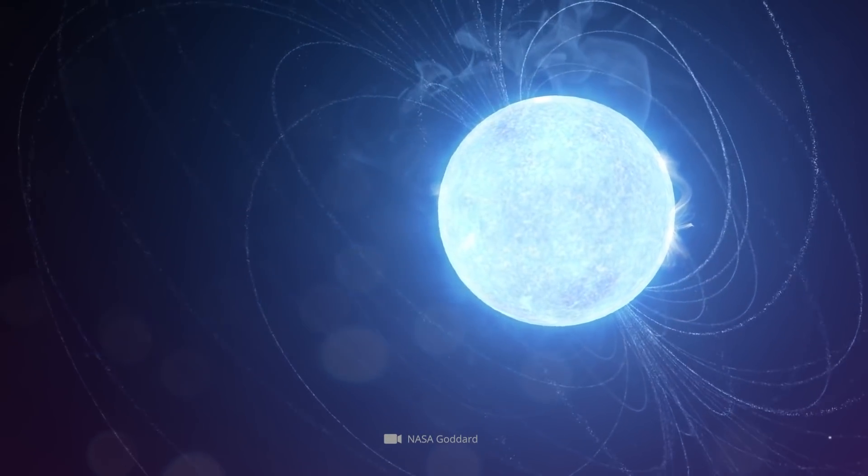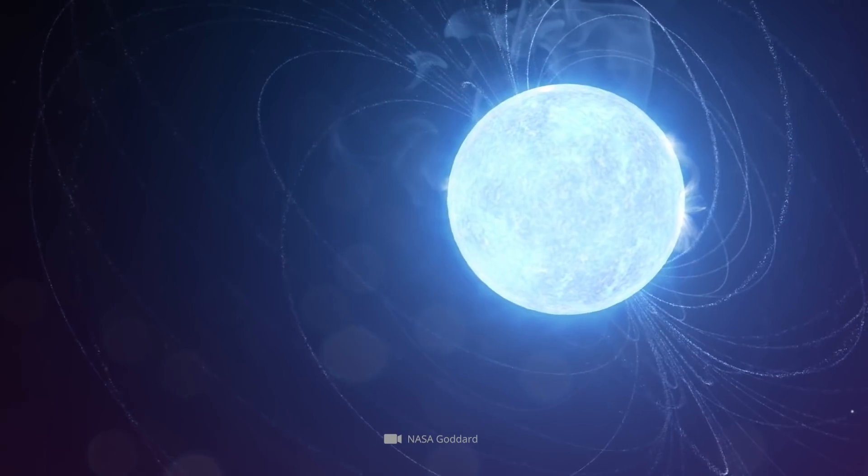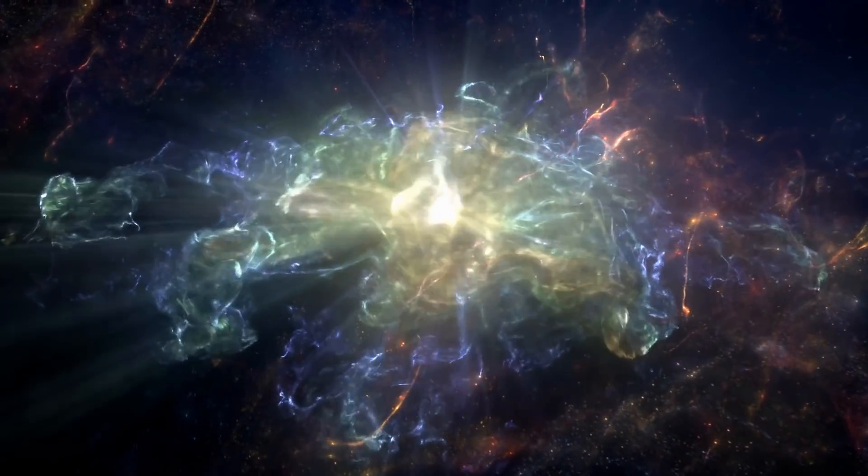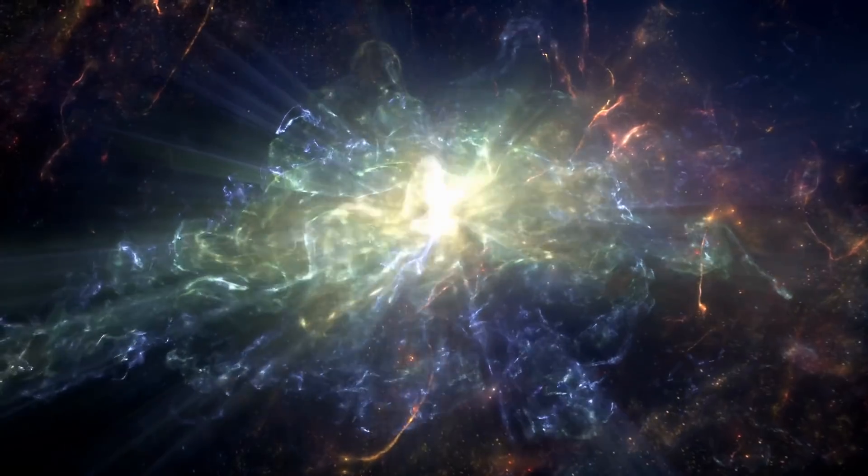Typically, the symmetry axis of its magnetic field deviates from the rotation axis, a circumstance that causes pulsars to emit so-called synchrotron radiation.